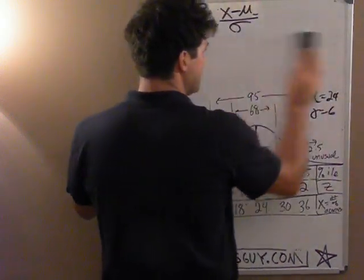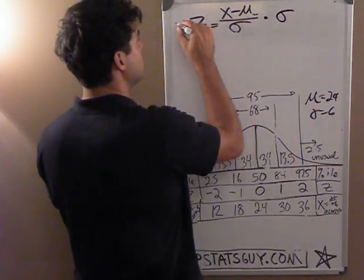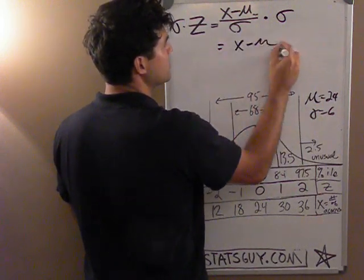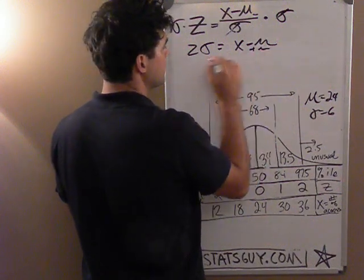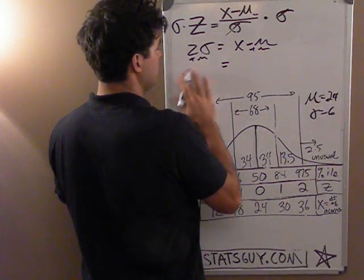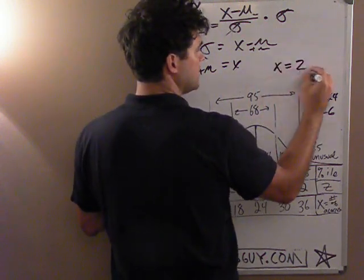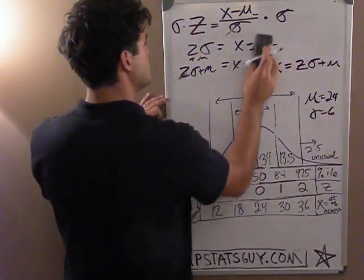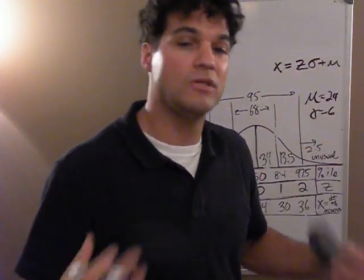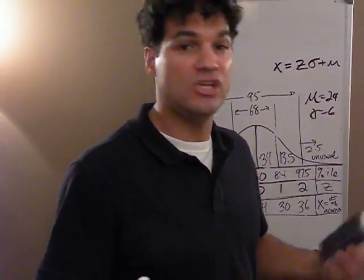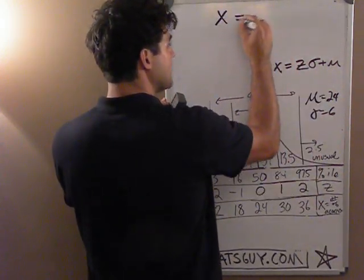Now I can manipulate that algebraically. You can skip this part if you want, but when I multiply both sides by sigma, I end up with x minus mu on one side — those cancel — equals z sigma. Then I add mu to both sides and get x equals z sigma plus mu. The first formula is when you have data and you want z-score. You use this rearranged formula when you have a z-score and you want the data value.